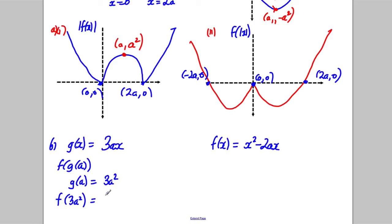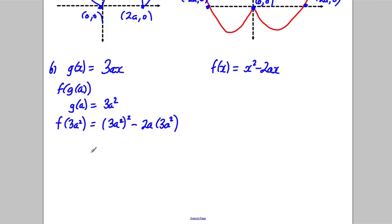Now we're putting in 3a². So we have (3a²)² - 2a × 3a². So (3a²)² would be 9a⁴. Take away, and this would be 3 × 2 is 6. a times a² is a³, like that.